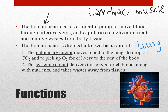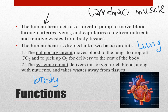The other circuit is the systemic circuit — systemic means body. This circuit delivers blood from the heart to the body and then back to the heart. The purpose of that circuit is to deliver oxygen to muscles and other tissues that need it for metabolism, and to pick up waste products and take them away.